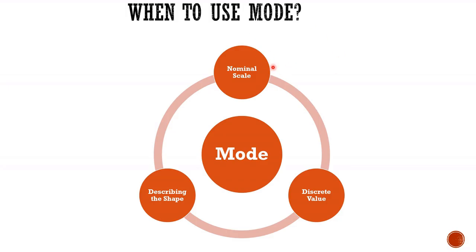So when to use the mode? When there is a nominal scale, when there is a discrete value, and when we are describing the shape. You can refer to the previous video for understanding the nominal scale and discrete value.